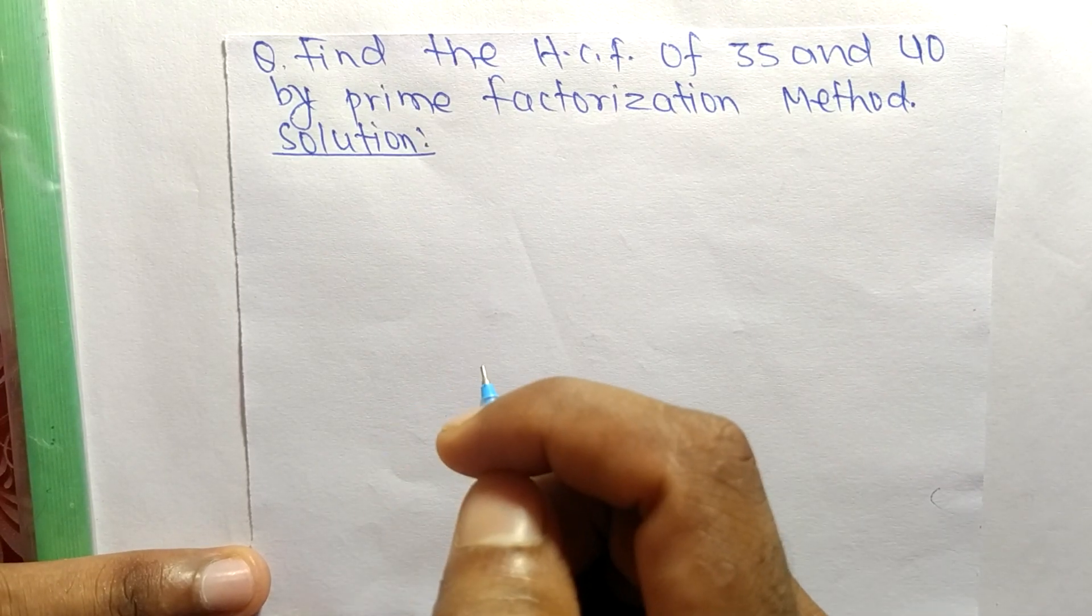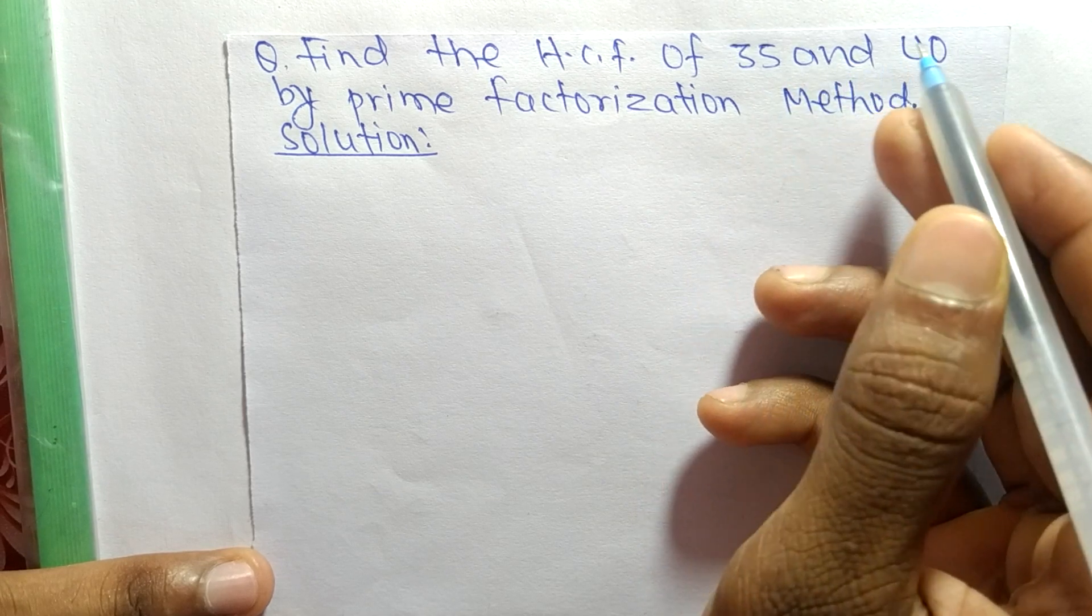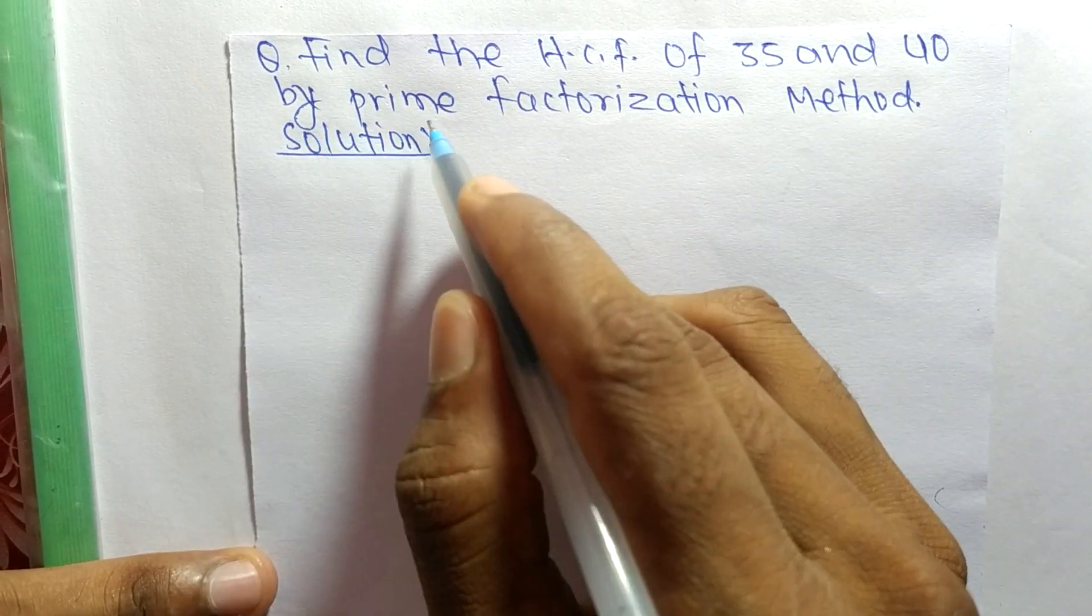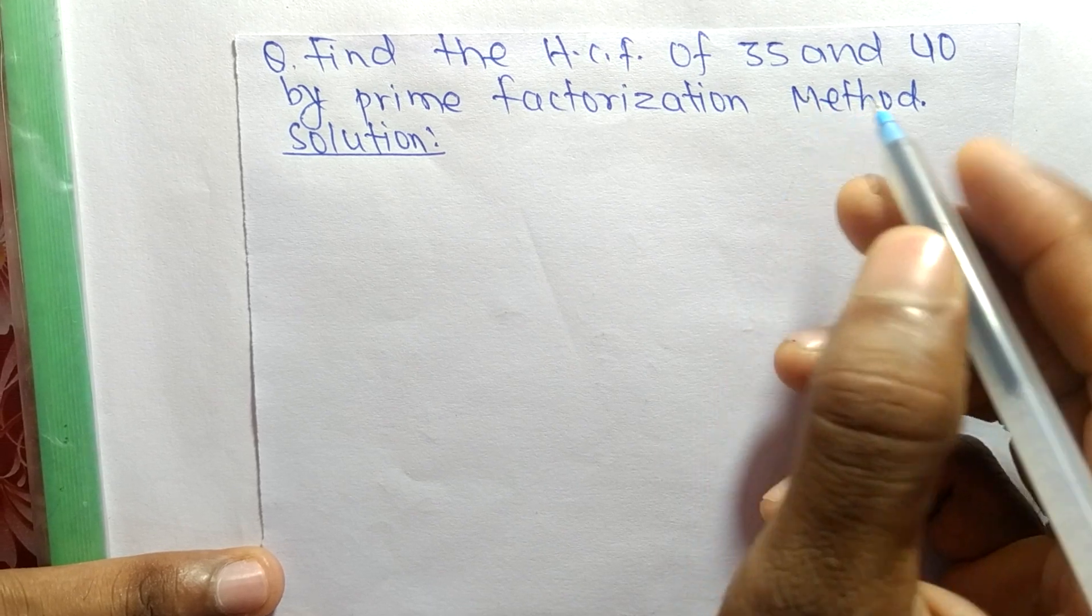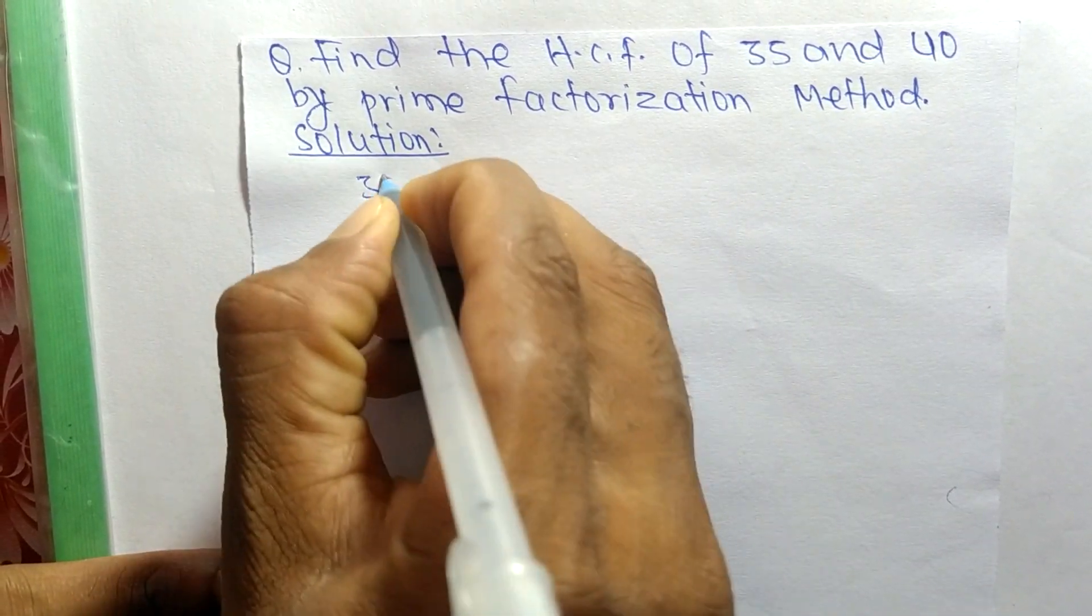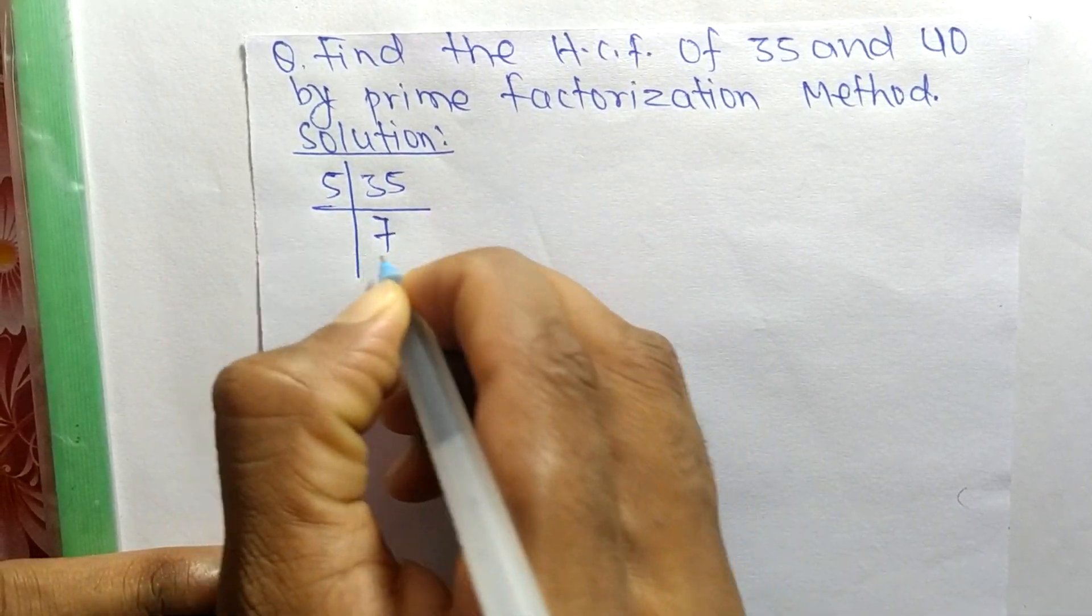Today in this video we shall learn to find the HCF of 35 and 40 by prime factorization method. First of all, we find out the prime factors of 35. So it is 5 times 7 equals 35 and 7 times 1 equals 7.